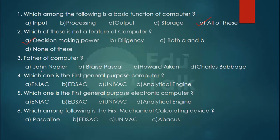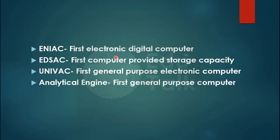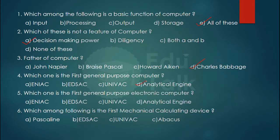The option is decision making power, that power is not in computer. Father of computer is Charles Babbage. Fourth question: which one is the first general purpose computer? ENIAC means first electronic digital computer. UNIVAC is the first general purpose electronic computer. Analytical engine means first general purpose computer. The answer is option D, analytical engine.